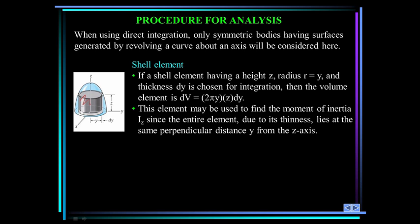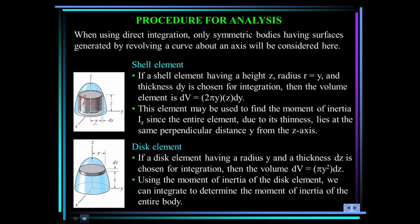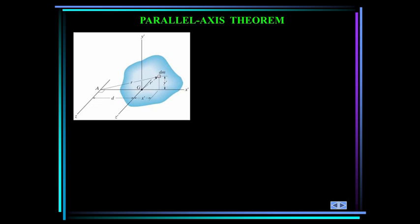If you have a shell element shown in gray, it has a height z, a radius r which is also equal to y, and the thickness dy is chosen for integration. The volume element dV is 2πy (the circumference) times the height z times dy. This element may be used to find the moment of inertia I sub z, since the entire element lies at the same perpendicular distance y from the z axis. You can also use a disk element with radius y and thickness dz. The volume is πy squared times dz. Using the moment of inertia of the disk element, we integrate to determine the moment of inertia over the entire body.